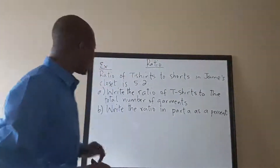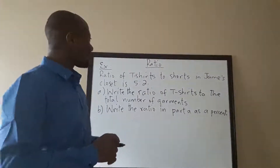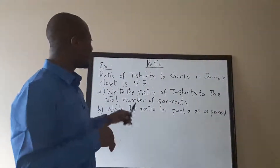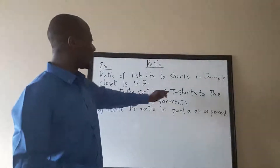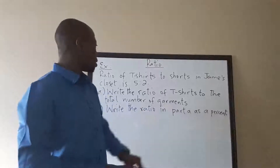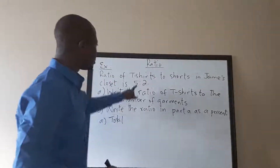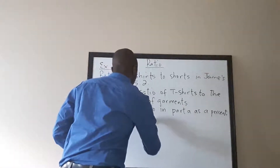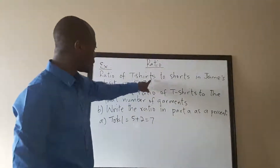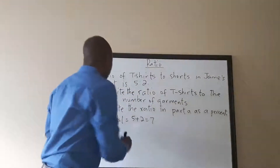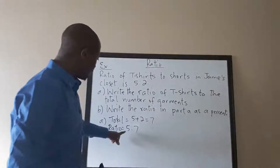The next question says the ratio of t-shirts to shorts in James's closet is 5:2, meaning 5 t-shirts and 2 shorts. Part A asks us to write the ratio of t-shirts to the total number of garments. The total is 5 plus 2, which is 7. So the ratio is 5:7.